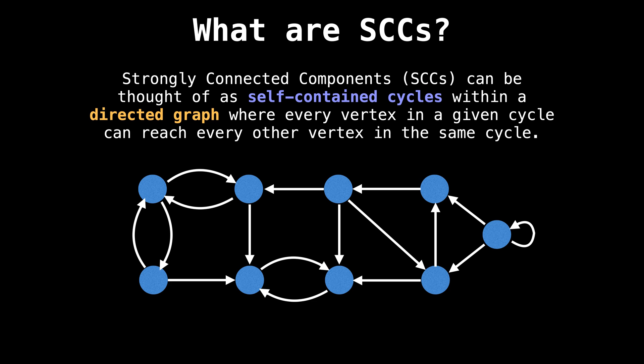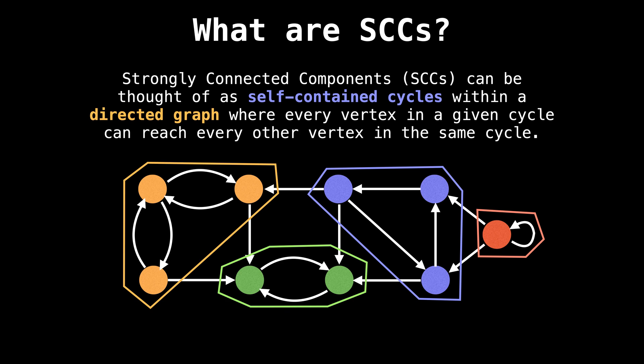I like to think of them as self-contained cycles within a directed graph, where for every vertex in a given cycle, you can reach every other vertex in the same cycle. For example, in the graph below, there are four strongly connected components. I have outlined them here in different colors. If you inspect each SCC, you'll notice that each has its own self-contained cycle, and that for each component, there is no way to find a path that leaves a component and comes back. Because of this property, we can be sure that SCCs in a graph are unique.